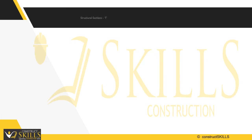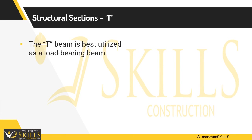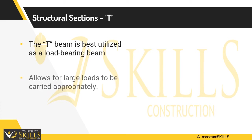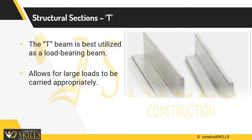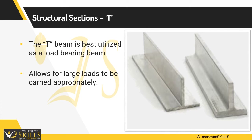The T-beam is best utilized as a load-bearing beam, allowing large loads to be carried. The top of the T-shaped cross section serves as a flange or compression member in resisting compressive stresses, while the web — the vertical section of the beam — serves to resist shear stress.